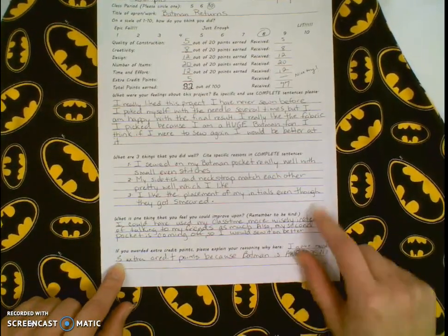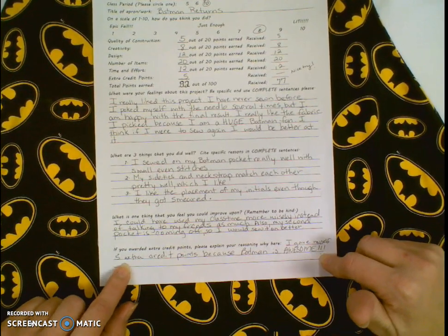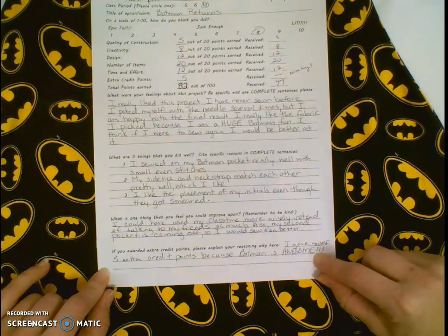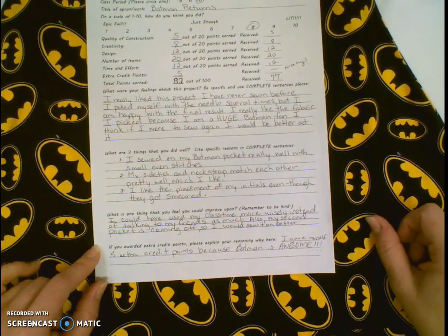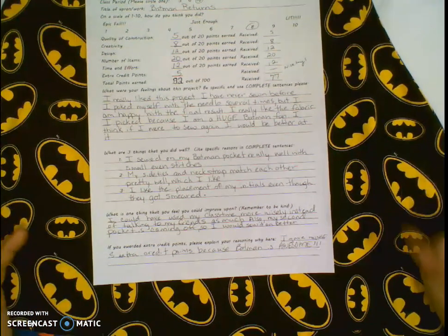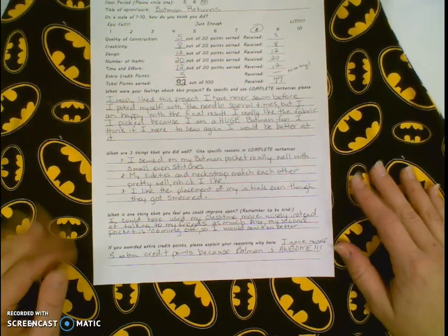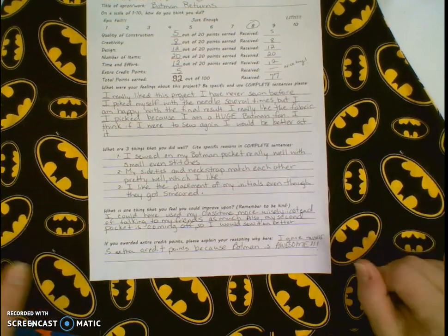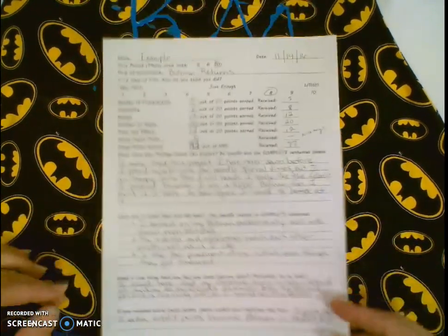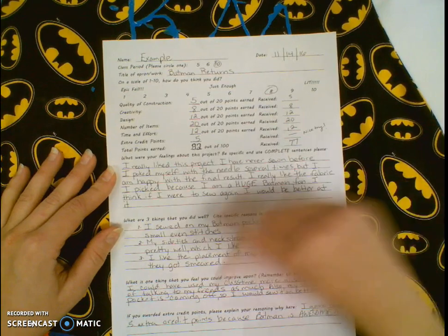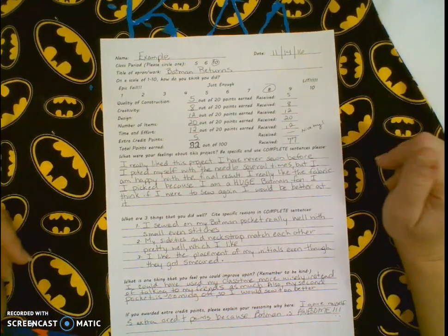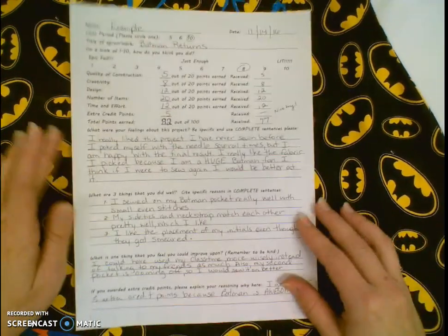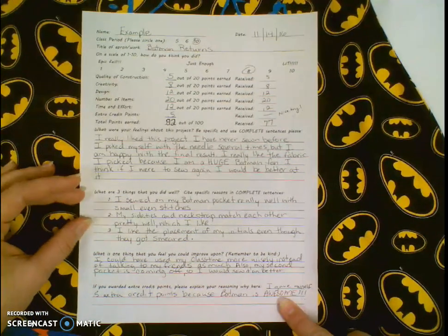Now here is where this person's arguing for their five points of extra credit. If you awarded extra credit points please explain your reasoning why here. They say I gave myself five extra credit points because Batman is awesome. And while that may be true, that's not really a reason to have five extra credit points. If you have six pockets or four pockets as opposed to two, then maybe you want to give yourself some extra credit. Maybe you want to give yourself extra credit because you helped five people in the class learn how to tie knots. That's a big deal. Even though that doesn't specifically apply to your apron, those are things that I believe you should receive extra credit for. But you have to explain your reasoning down here, otherwise I won't even consider it.